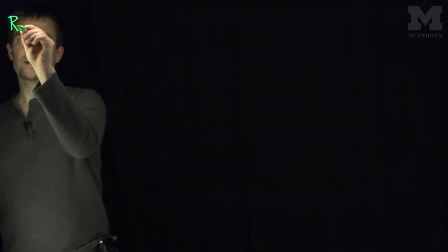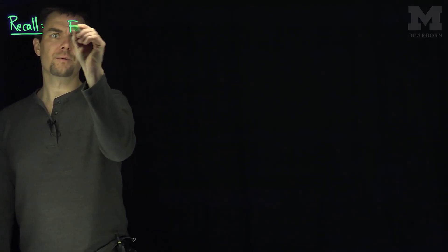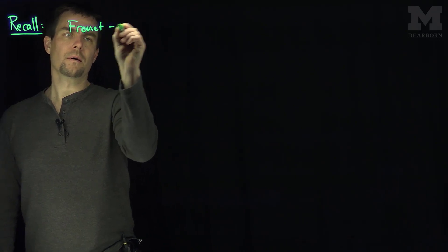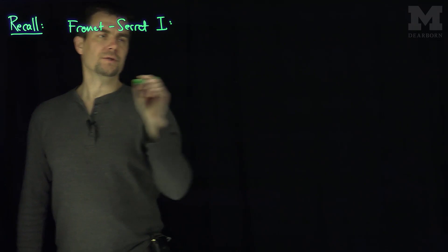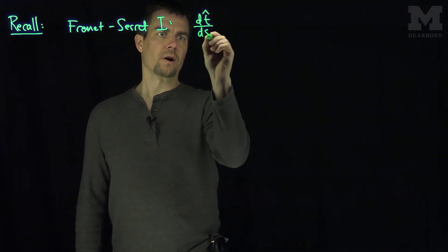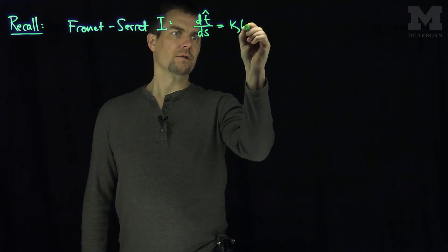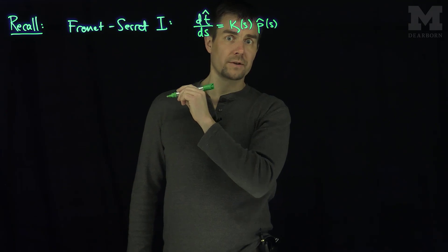Let's recall what the first two Frenet-Serret equations are. Frenet-Serret number one asserts that the derivative of the unit tangent vector with respect to the arc length parameter is the curvature in the direction of the principal normal vector.